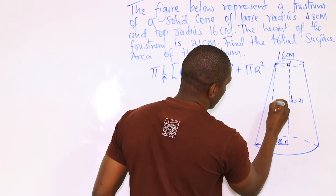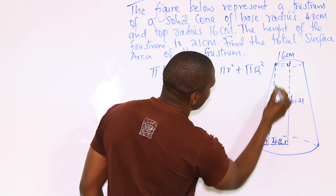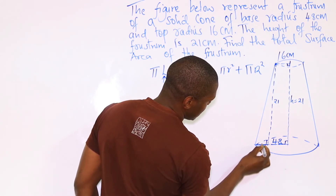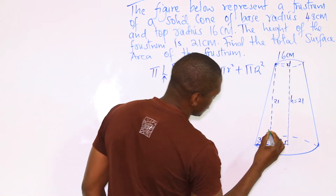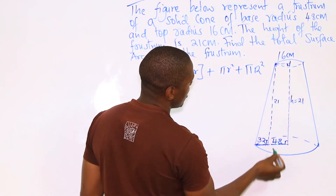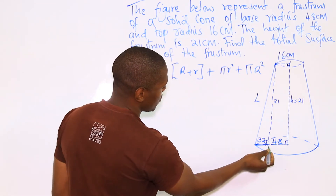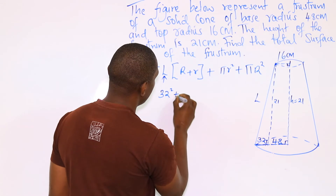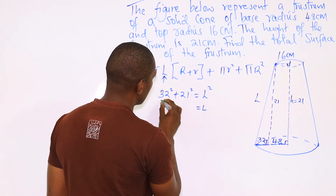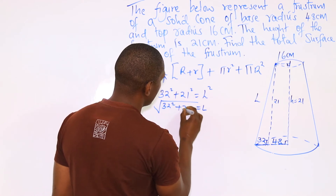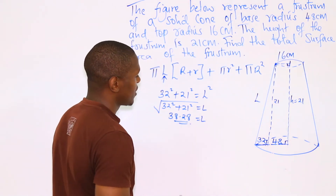Drop a perpendicular of height H, which equals 21. This forms a right-angle triangle. The horizontal side is 48 minus 16, which equals 32 centimeters. With 32 centimeters and 21, we can find the hypotenuse, which is the slant height of the frustum. So L squared equals 32 squared plus 21 squared, giving L equals the square root of (32² + 21²). Using a calculator, L will be 38.28 centimeters to 4 significant figures.